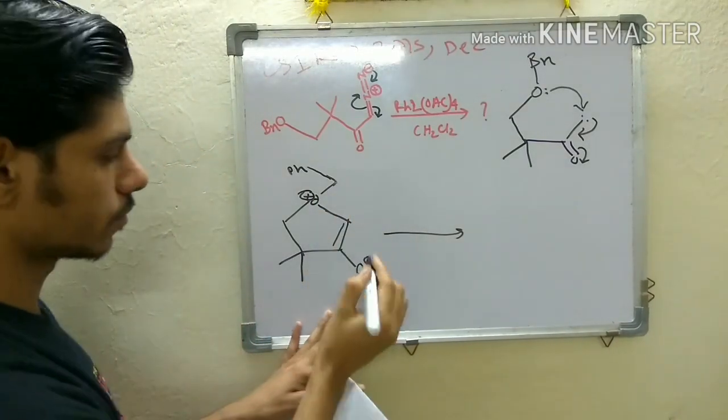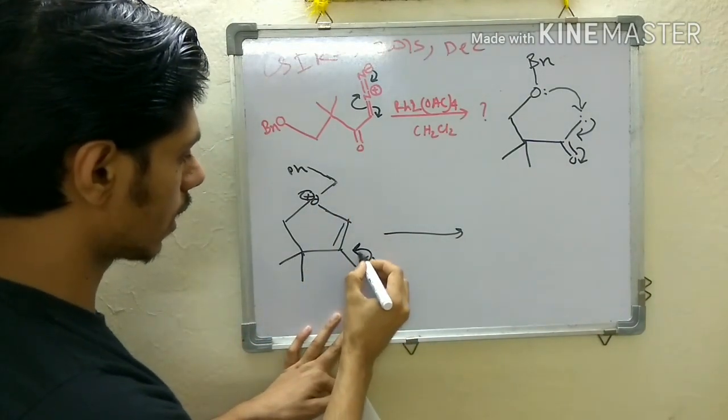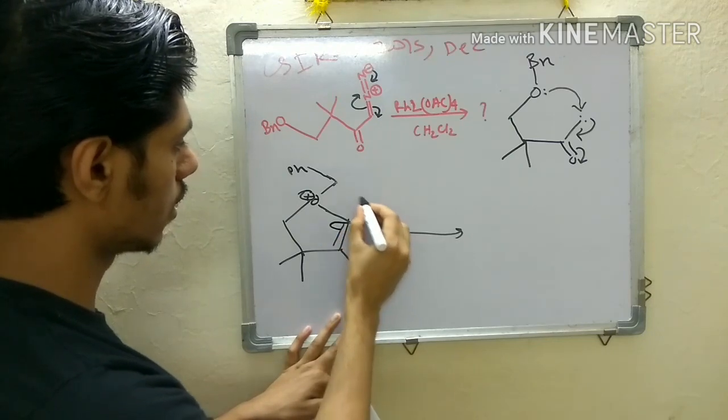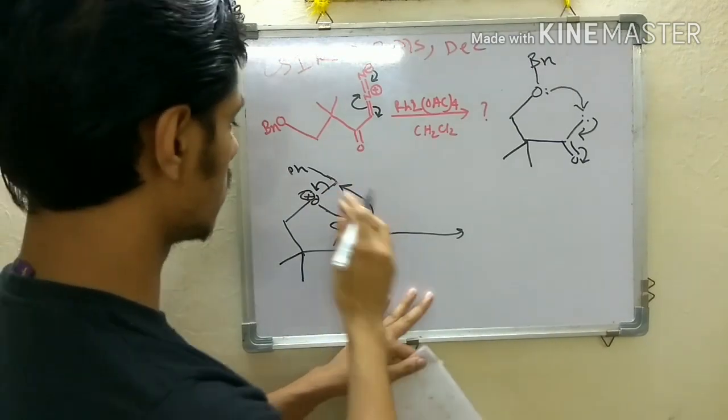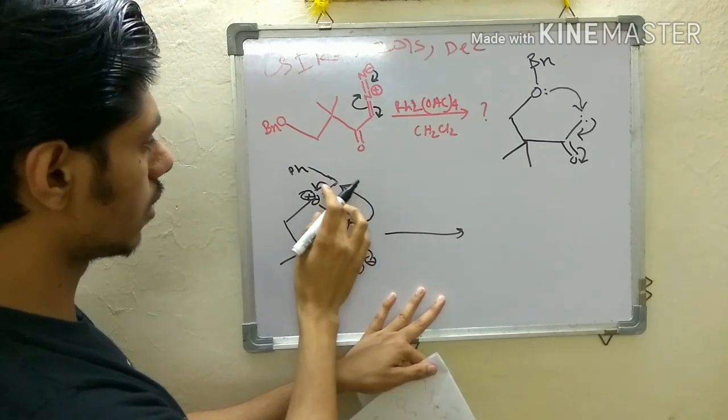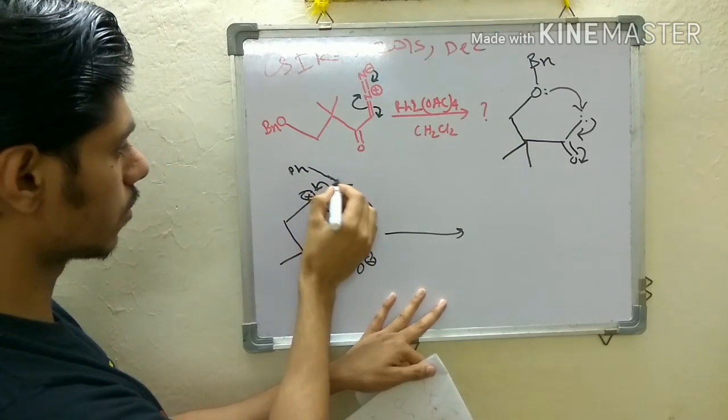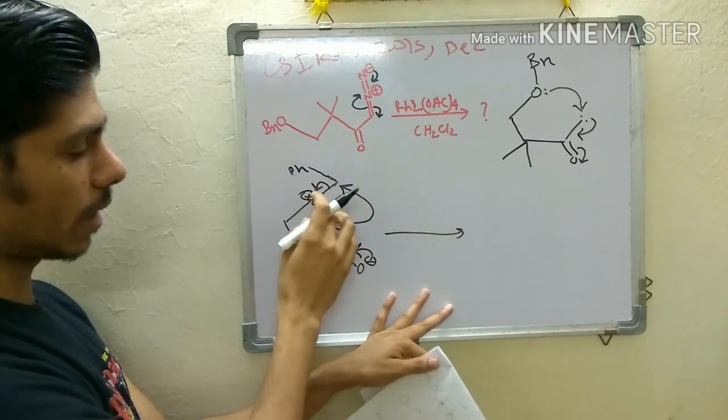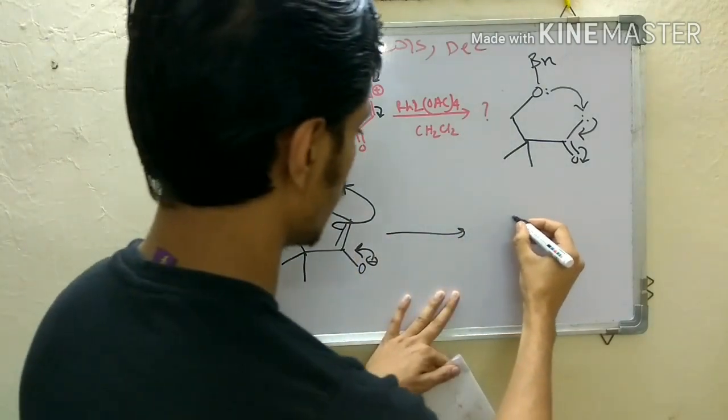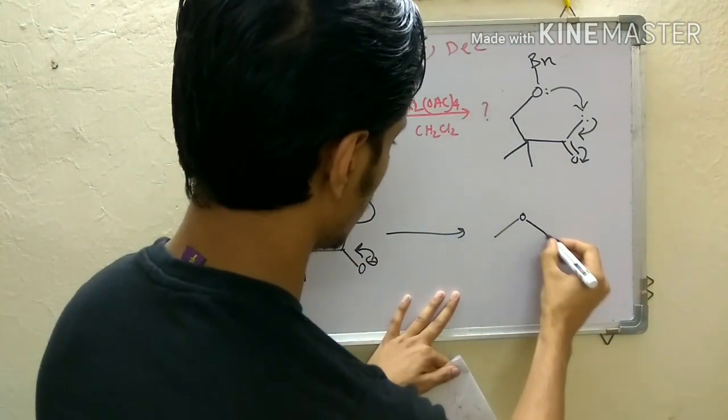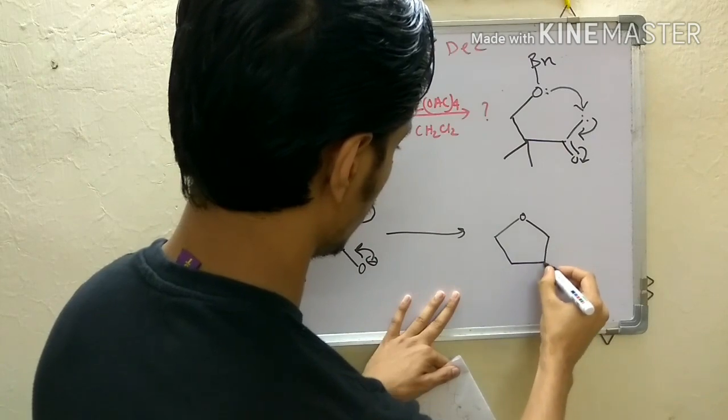Now see this is enolate. This enolate can get alkylated and there is an internal electrophile present - this one. This is the internal electrophile because there is O minus O plus so it is a good leaving group.